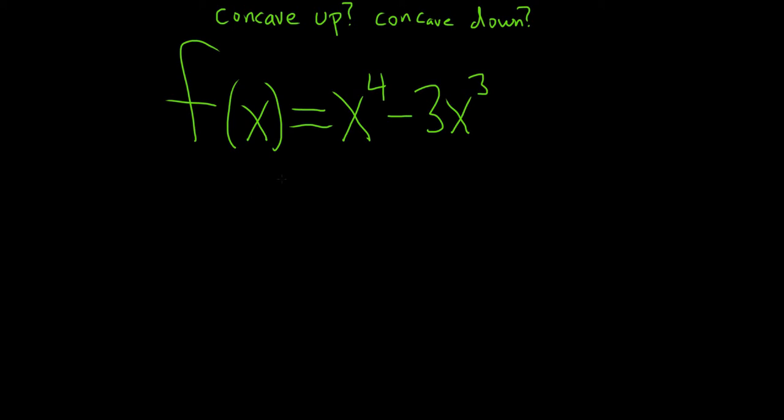In this problem we have to find the intervals where this function is concave up and concave down. To do that we have to first go straight to the second derivative and set it equal to zero. So step one in this process is to solve this equation, the second derivative equal to zero. Also if there's any asymptotes or any domain issues we want to make note of that in this step as well.